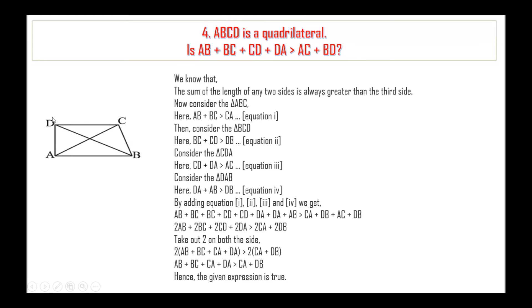Consider triangle CDA: CD plus DA is greater than AC. Consider triangle DAB: DA plus AB is greater than DB. By adding equations 1, 2, 3 and 4 we get AB plus BC plus BC plus CD plus CD plus DA plus DA plus AB is greater than CA plus DB plus AC plus DB.